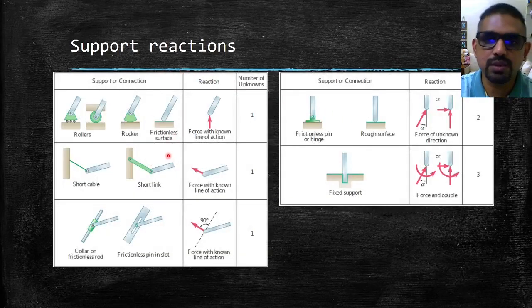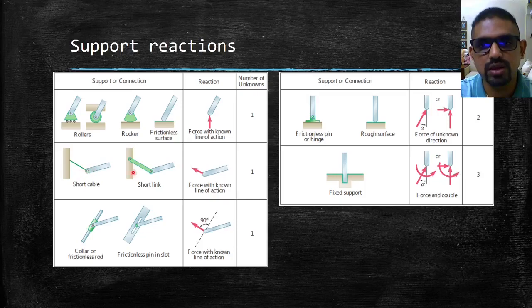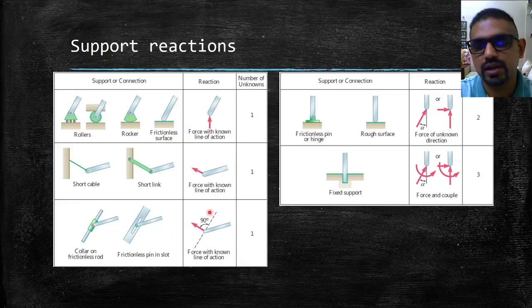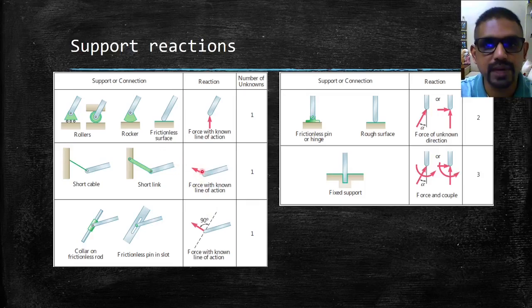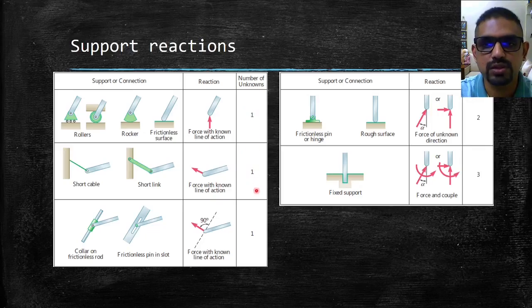These are some of the common support reactions. Type 1 includes a roller, rocker, frictionless surface, short cable, short link, or collar on a frictionless rod. In all these cases, the reaction acts along a predefined or predetermined line of action, so the only unknown is the magnitude — making the number of unknowns equal to one.